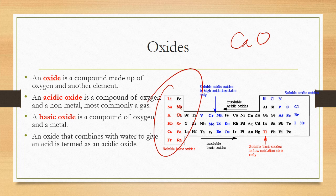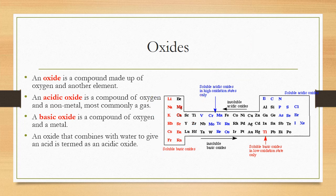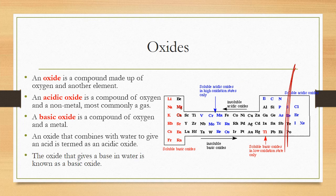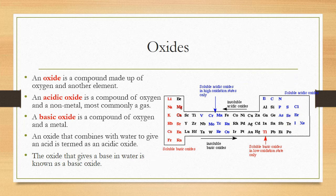An oxide that combines with water to give an acid is called an acidic oxide. Those which form bases when combined with water are called basic oxides. This is shown on the periodic table — non-metal oxides on one side, metal oxides on the other.